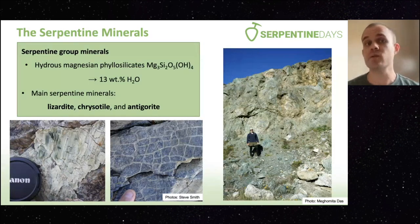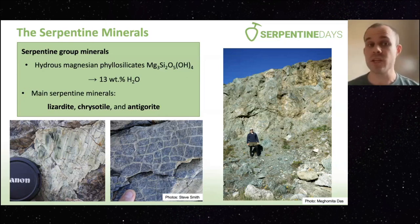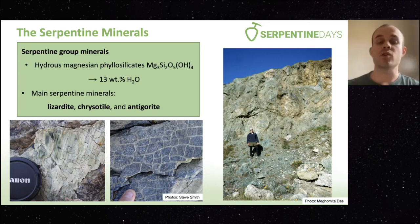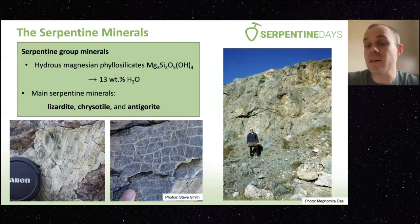The serpentine mineral group — you're probably at least somewhat familiar with them. They're hydrous magnesium phyllosilicates, chock full of water, about 13 weight percent. We have our low-temperature serpentines nominally — the main serpentine minerals lizardite and chrysotile — and then our nominal high-temperature antigorite. We'll look at these minerals and what their presence and context tells us about either processes or local conditions.